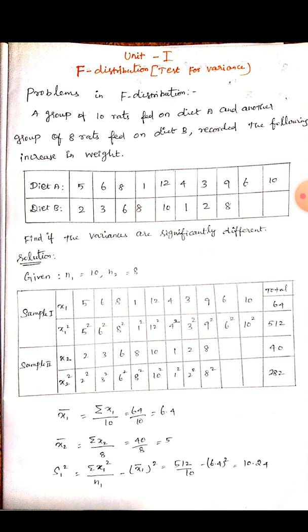So given: N1 is the number of data in diet A, and N2 is the number of data in diet B, so N2 equals 8. Just form the data: X1 for diet A, and X1 square as the corresponding squared data. Then find the total for normal values and the total for squared values.